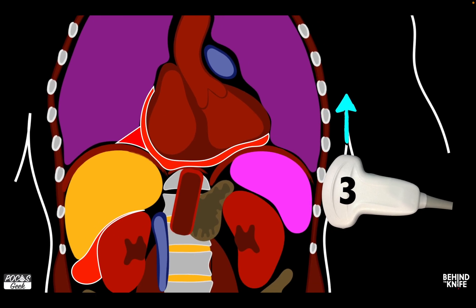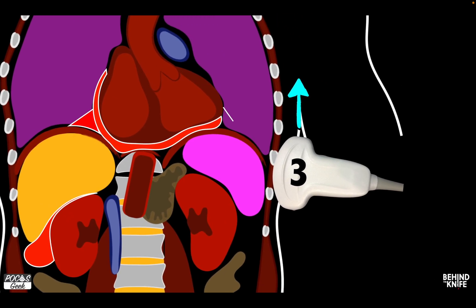After evaluating the sub-xiphoid space, we're going to move the probe over to the posterior axillary line in the left upper quadrant. Because the spleen is smaller, we need to move the probe more superior and more posterior. In the left upper quadrant, we're going to see fluid at the poles of the spleen first, and then it's going to track above or superior to the spleen. We seldom see fluid collect between the spleen and the kidney, and this is due to the splenic colic ligament, which does not allow fluid to typically go down into the paracolic gutter.